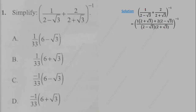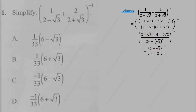We multiply the numerators accordingly — one side leaves us with (2 + √3) and the other with (2 − √3). We then expand and apply the difference of two squares in the denominator. Combining like terms: 4 + 2 = 6, and the √3 terms give −√3, so we get (6 − √3) over (4 − 3).